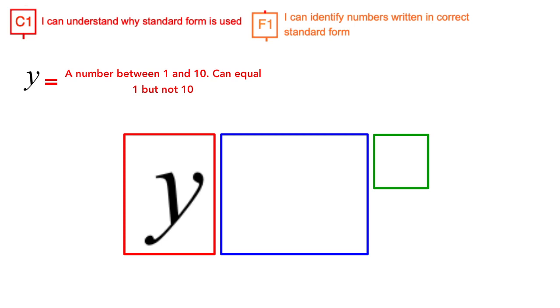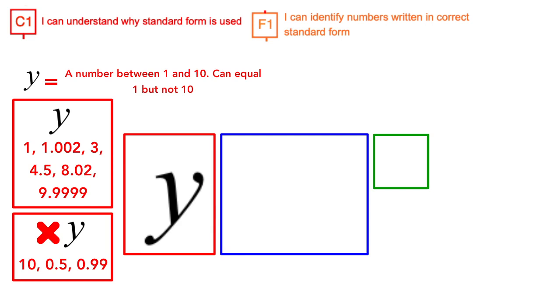So the first number can be 1, 1.002, 3, 4.5, 8.02 or even 9.9999. The first number cannot equal to numbers such as 10, 0.5 or even 0.99 as they are outside our criteria.